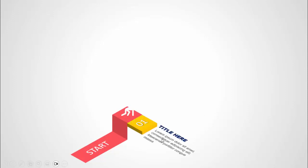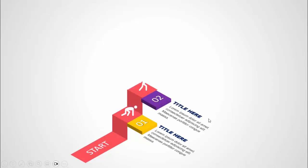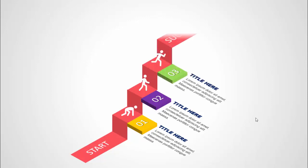In today's tutorial I'm going to show you how to create a three-step infographic slide in PowerPoint. This is how the slide works: when I click it, it will show you the start and then the first option — you can see the title and the detail text, and you can add some icons here. When I click it will show you the second option with a different color.